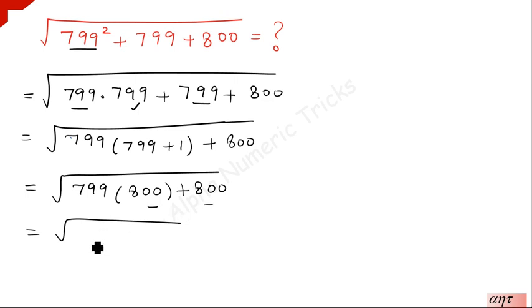Here 800 is common, so take it outside: √[800(799 + 1)].